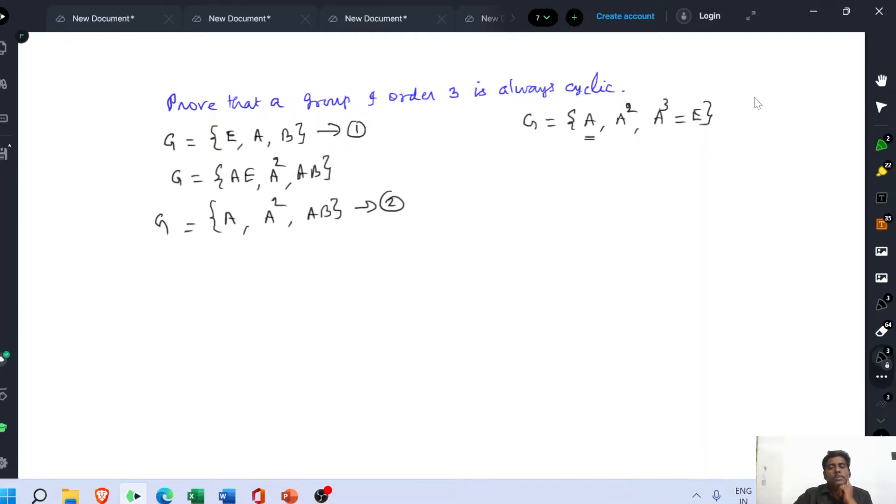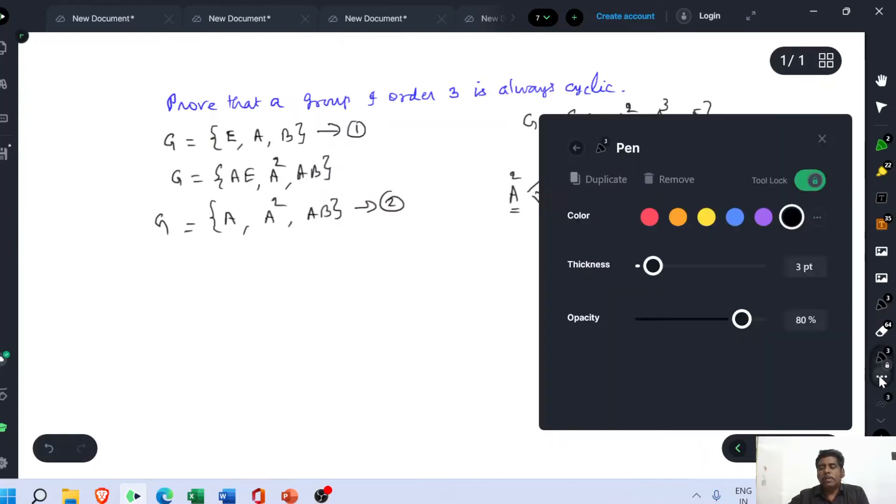So A square is related with three elements: E, A, and B. These are all the three possible values of A square. Now we have to choose the value of A square is equal to E.